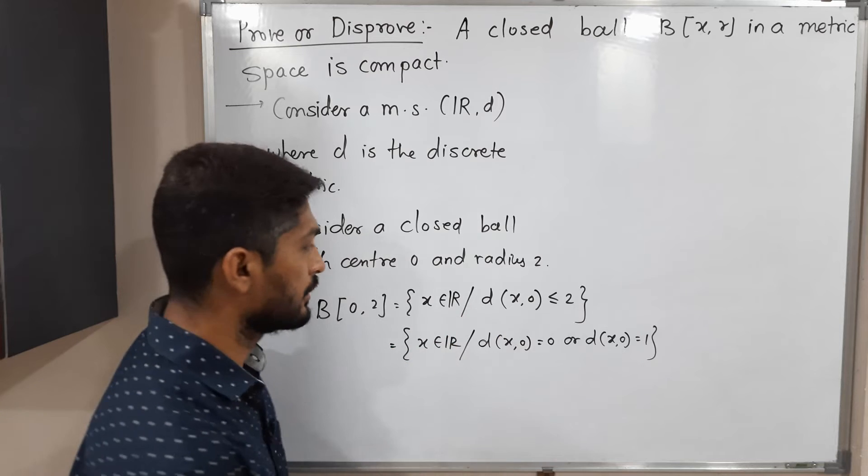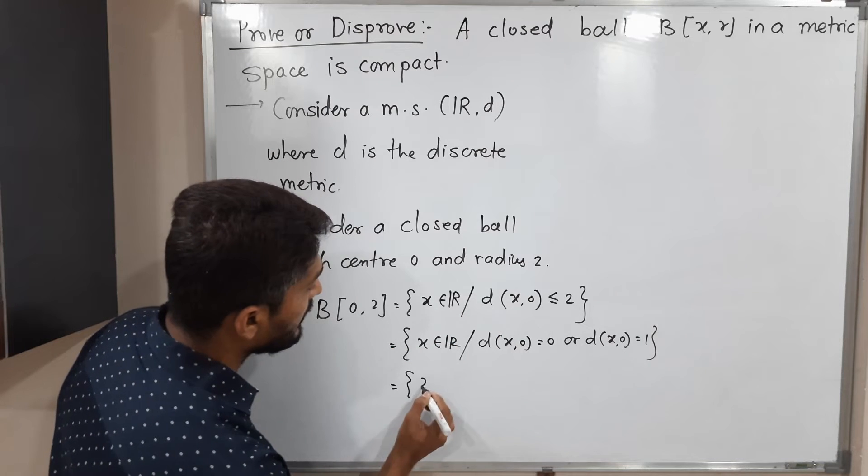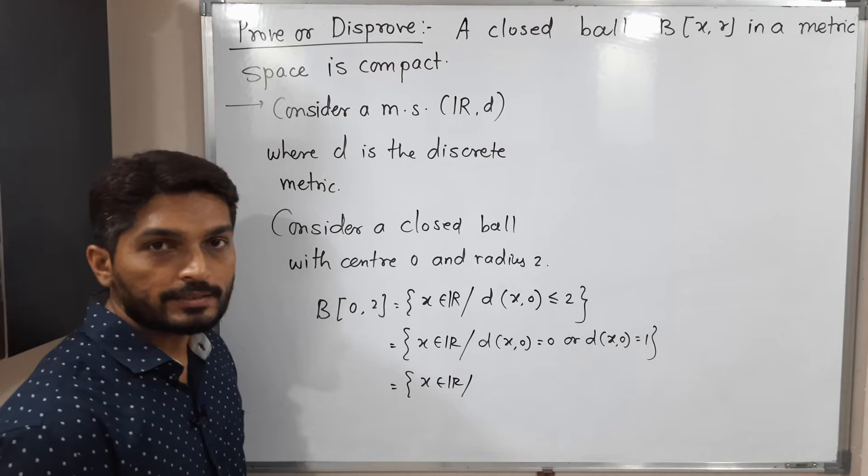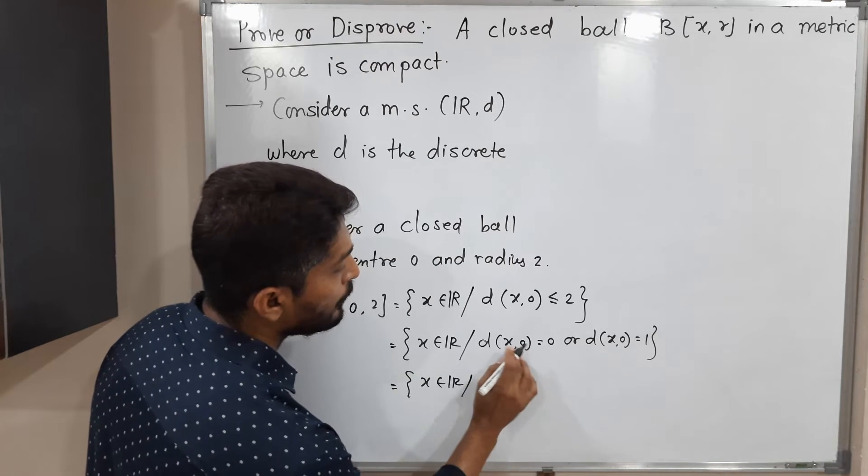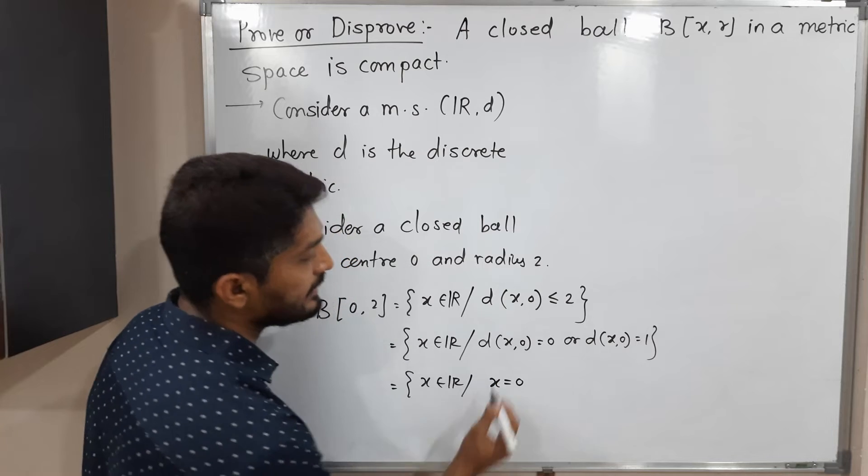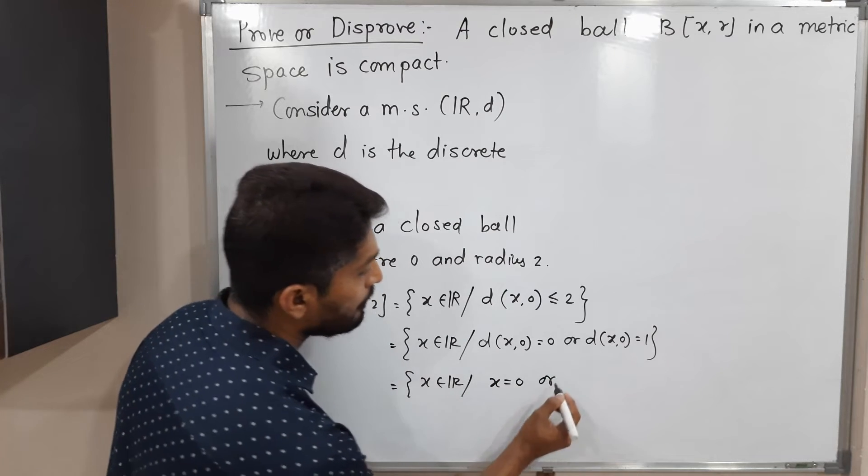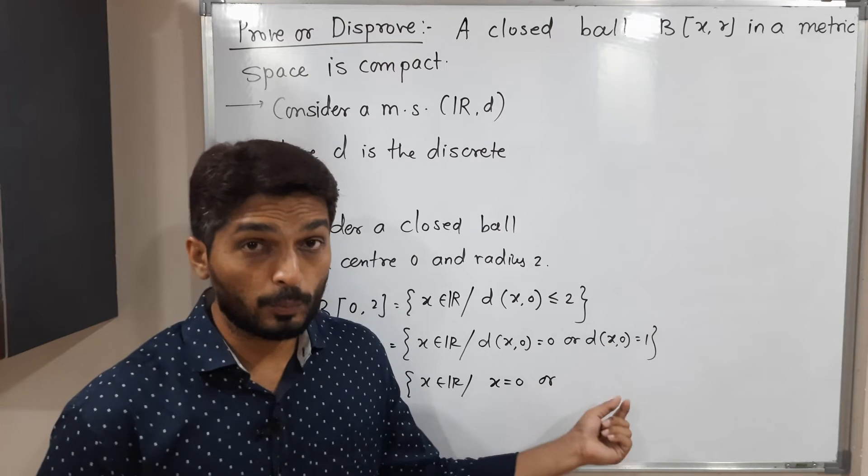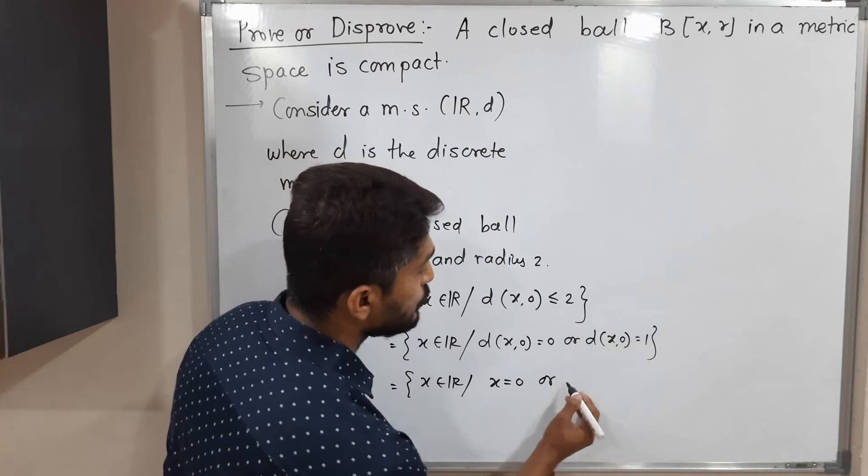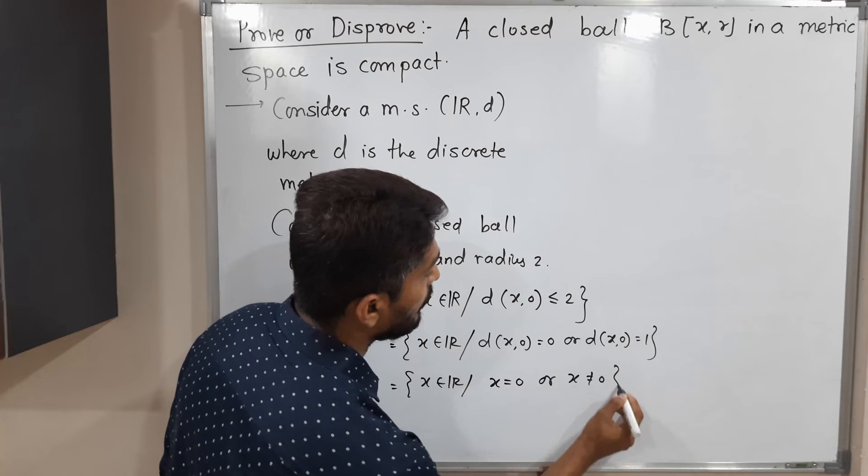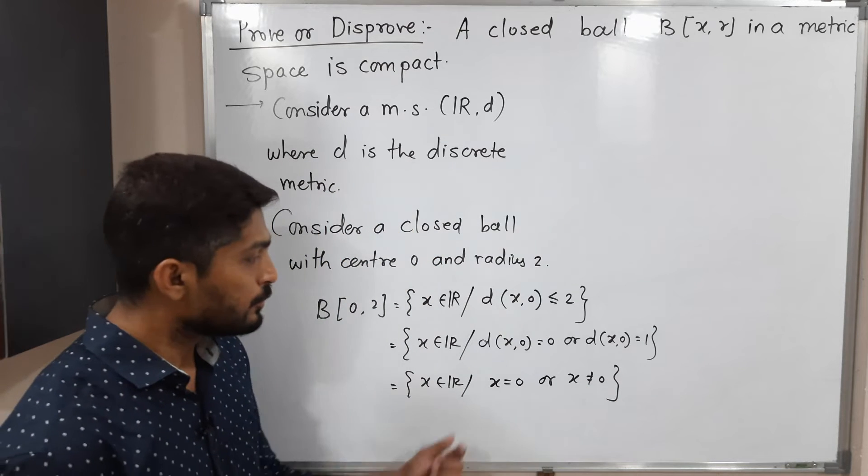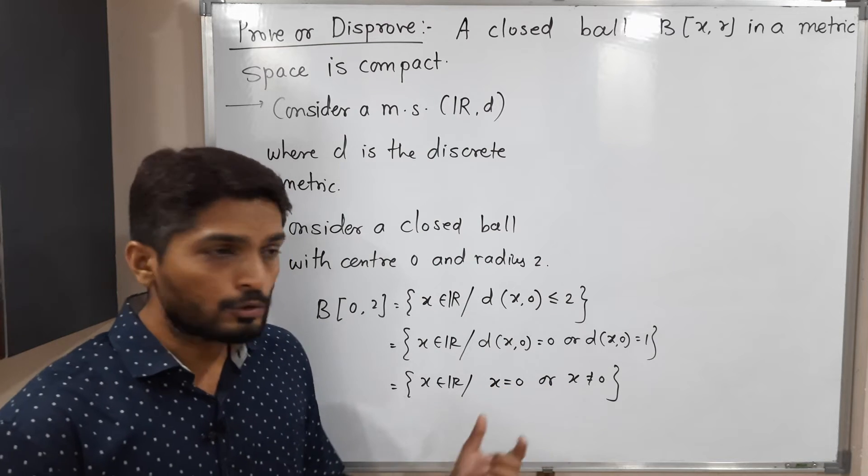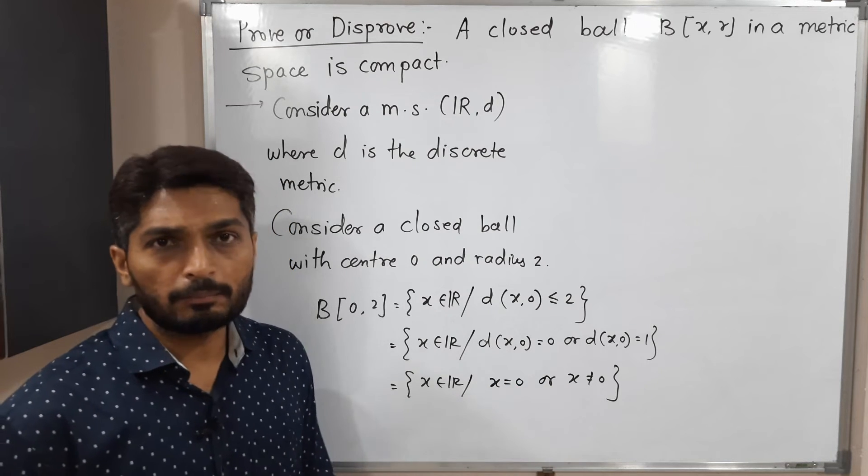Both possibilities are present here since the distance is less than or equal to 2, and 0 and 1 both satisfy this condition. This equals {x ∈ R : x = 0 or x ≠ 0}. When the distance between two points is 0, it means both points are equal, so x equals 0. Or in discrete metric space, when the distance between two points is 1, these two points are unequal or distinct.